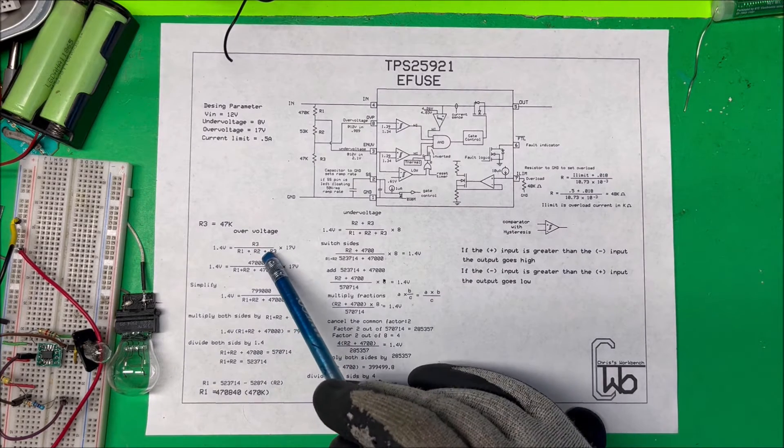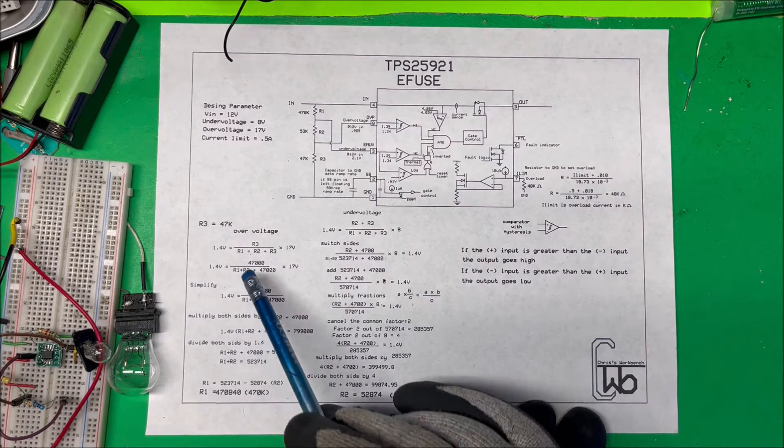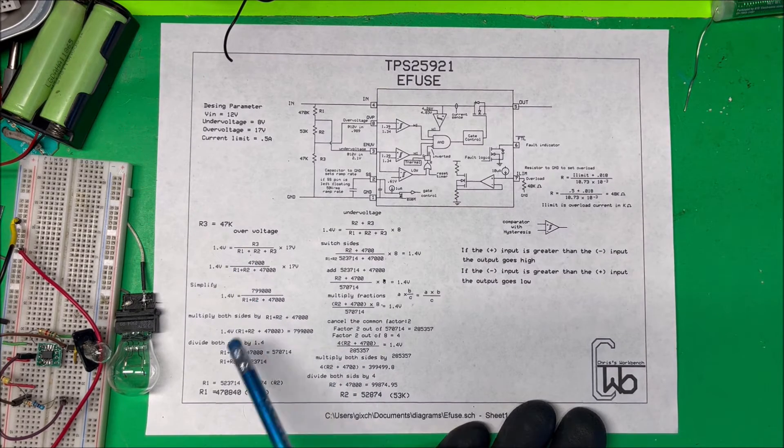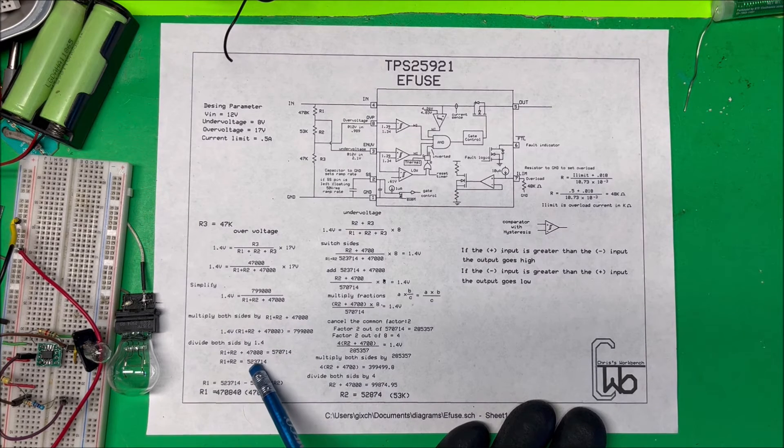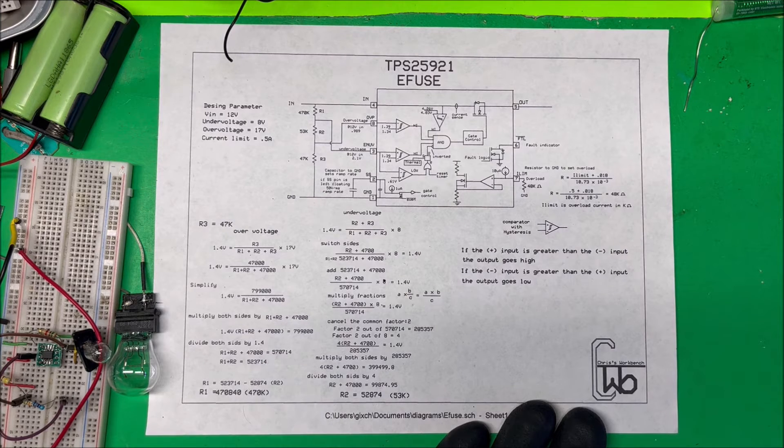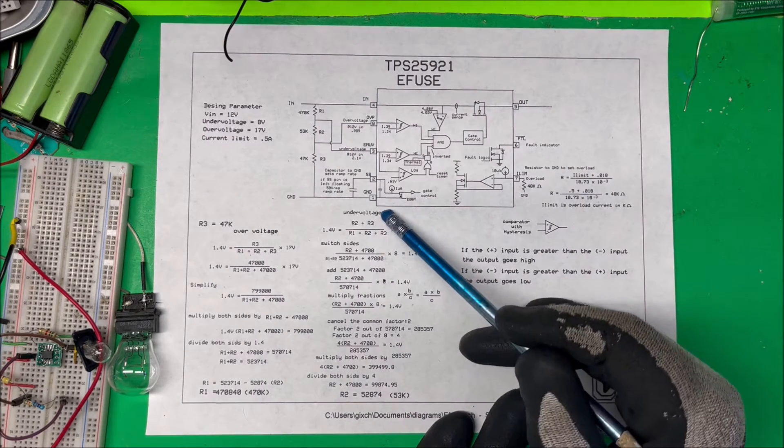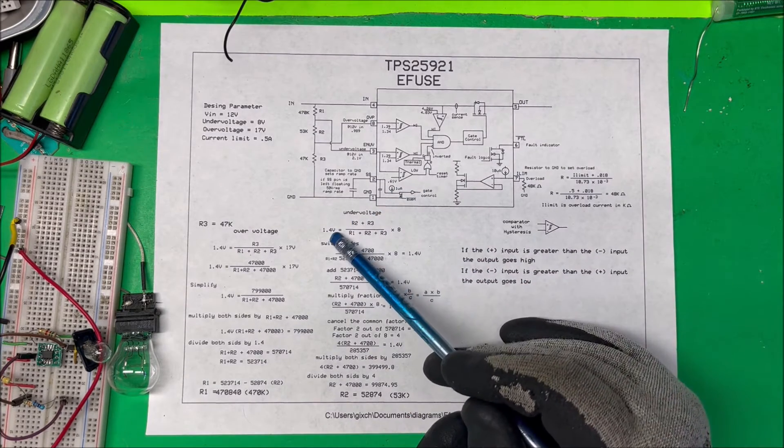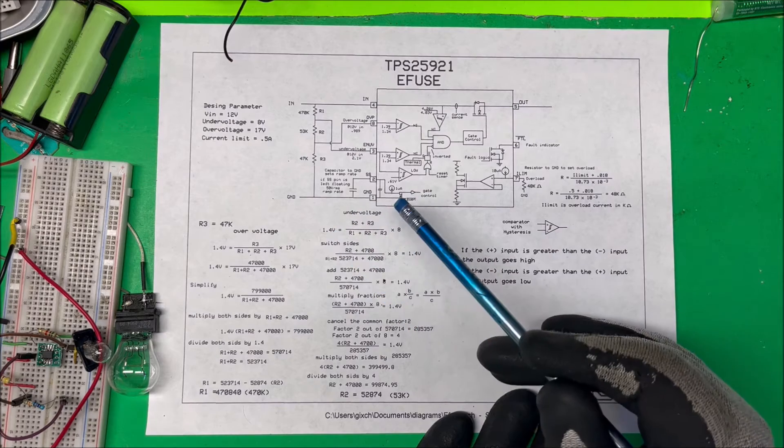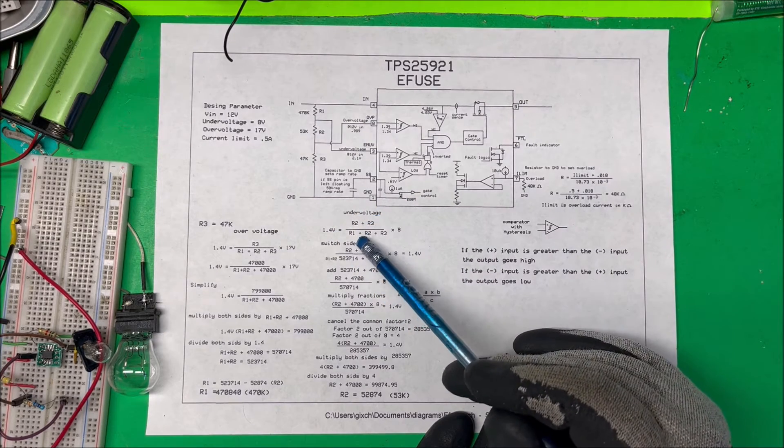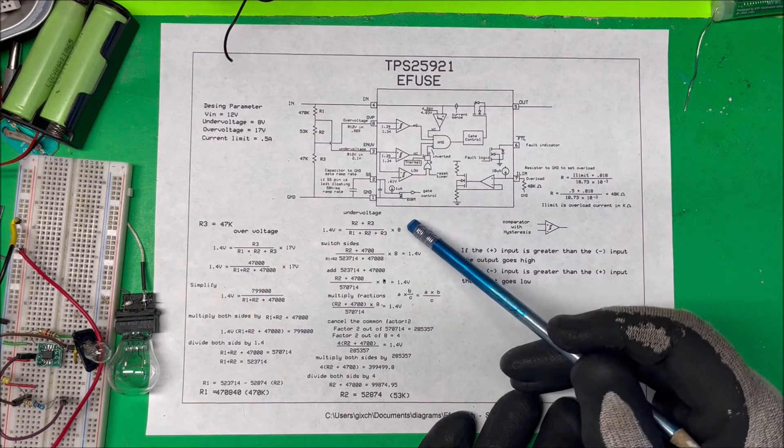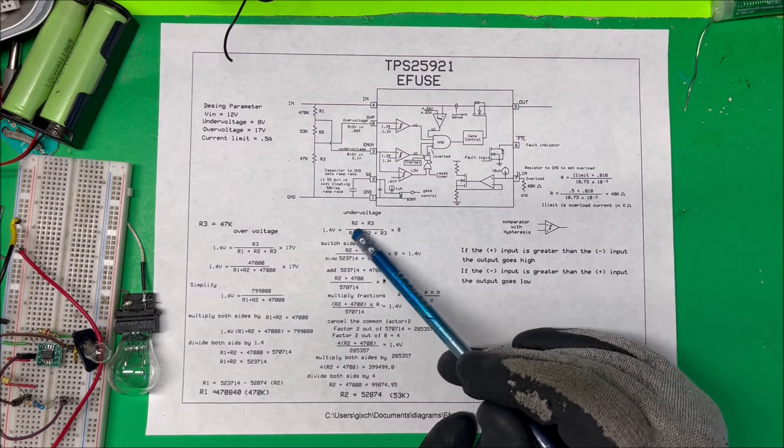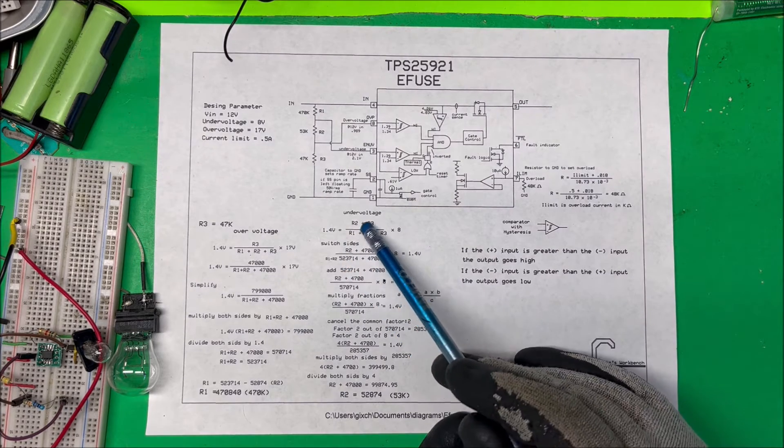For overvoltage at 17 volts, we take our internal reference of 1.4 volts, which equals R3 divided by (R1 + R2 + R3) times 17 volts. We know R3 is 47k, so we combine R1 and R2 together to find what those are. We do the math and it comes out to like 523k for both of those together.